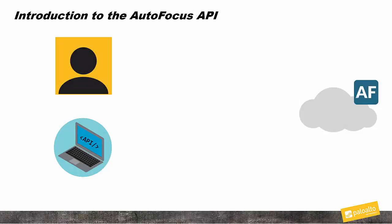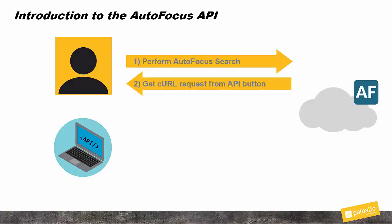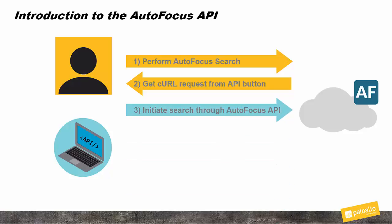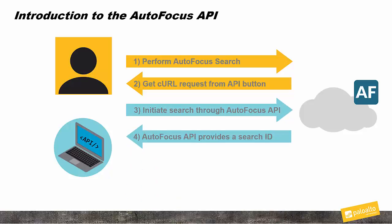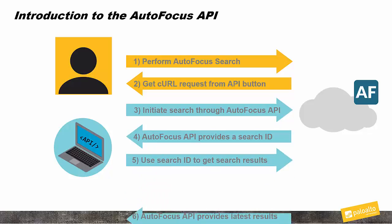We'll start by running a simple search and get the corresponding curl request on the Autofocus portal. You'll then use this request to initiate the same search through the Autofocus API and, using another request, view the results.